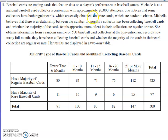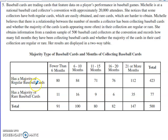We've got baseball cards that are either regular or rare, and someone's at a collector's convention with approximately 20,000 attendees. Michelle believes there's a relationship between the number of months someone has been collecting the cards and whether the majority of the cards in their collection are regular or rare. She took a random sample of 500 baseball card collectors and the data is presented in a two-way table.